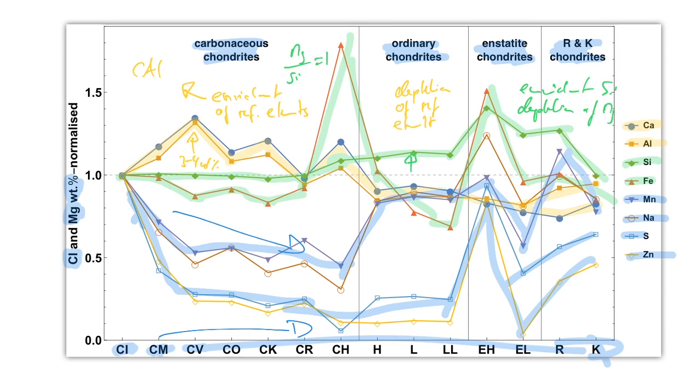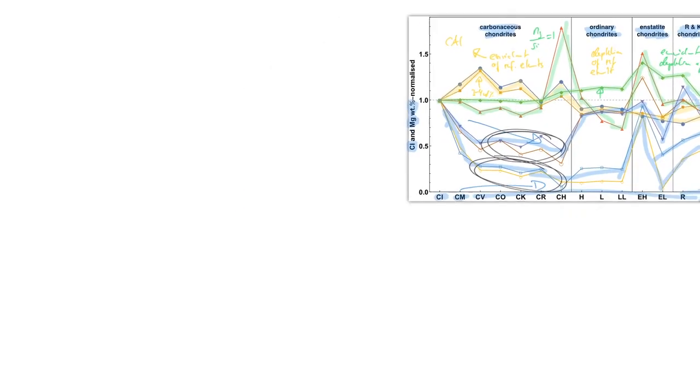Now, the question is what is the reason for these depletions in volatile elements? So what is the reason that, for example, carbonaceous chondrites have volatile element depletions? Now, there are basically two possibilities.